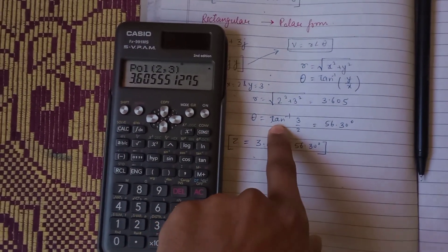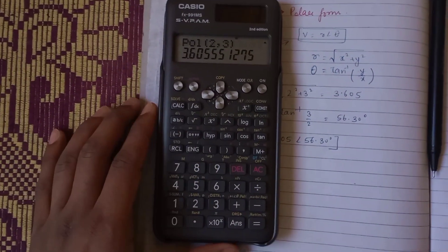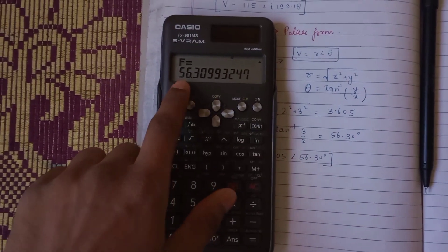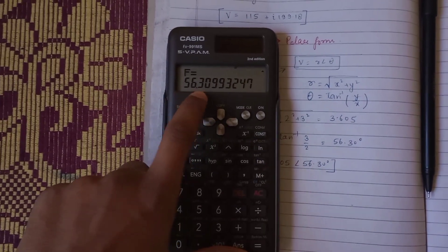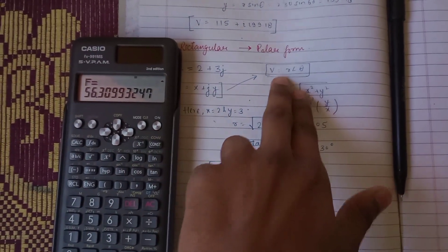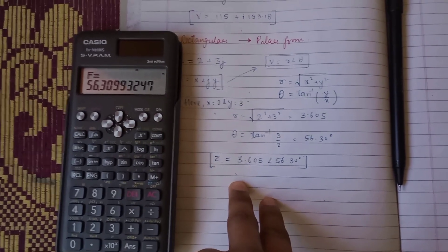Now we have to calculate theta, which is tan inverse. Press RCL and then tan to get the angle of 56.30 degrees. Write this in polar format and you have successfully converted to polar form.